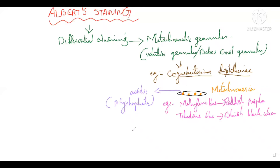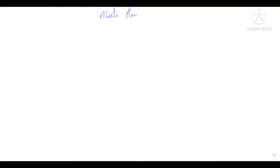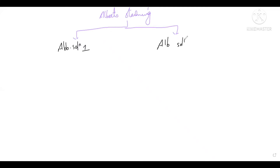Chemically, metachromatic granules are highly acidic and contain polyphosphate materials as stored reserves. Whenever there is nutrient deprivation, bacteria utilize the polyphosphate stored inside the metachromatic granules.